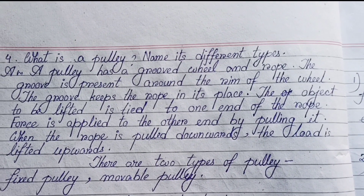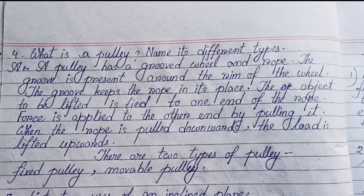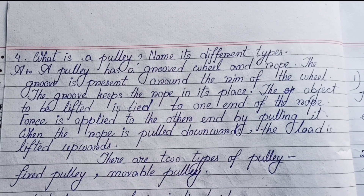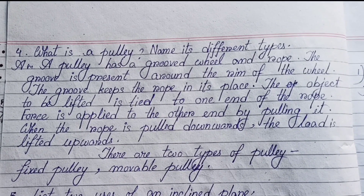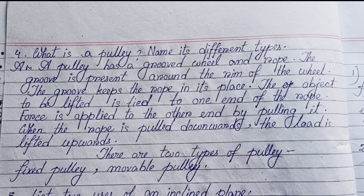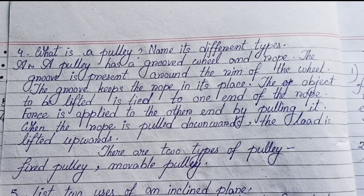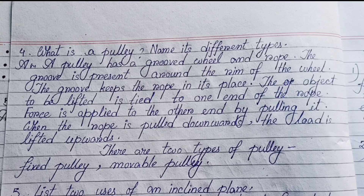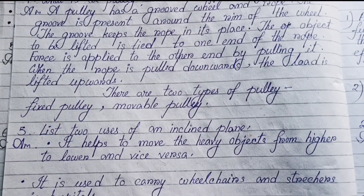Number four: What is a pulley? Name its different types. A pulley has a grooved wheel and rope. The groove is present around the rim of the wheel and keeps the rope in place. The object to be lifted is tied to one end of the rope, and force is applied to the other end by pulling it. When the rope is pulled downwards, the load is lifted upwards. There are two types of pulley: fixed pulley and movable pulley.